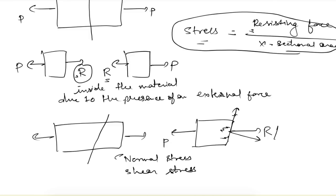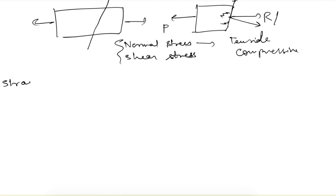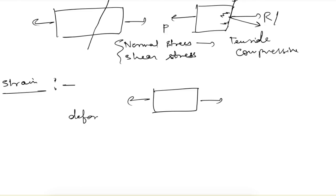We will understand more about these stresses later. Normal stress can be of two types — it can be tensile or it can be compressive. After stress, there is another thing known as strain. Because we apply a load, if the load is sufficiently large there will be some deformation. Strain is defined as the change in length (delta L) divided by the original length, so it is a unitless quantity.